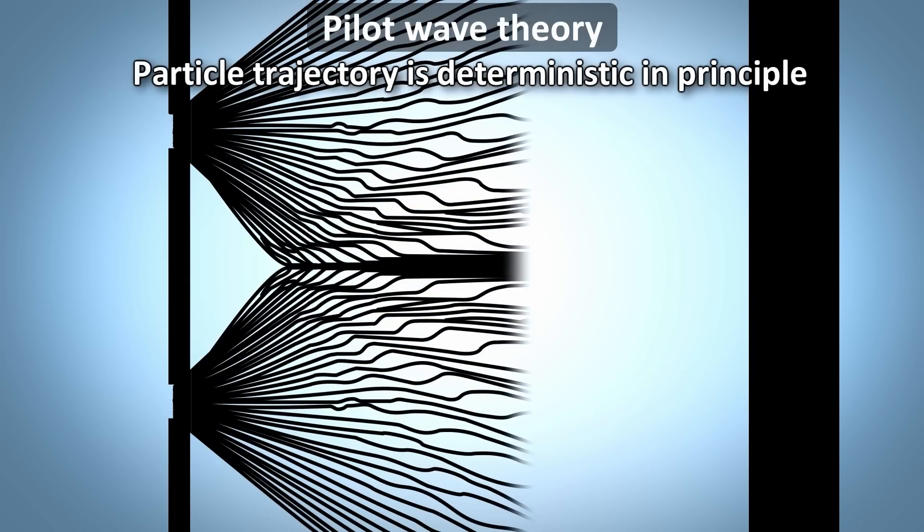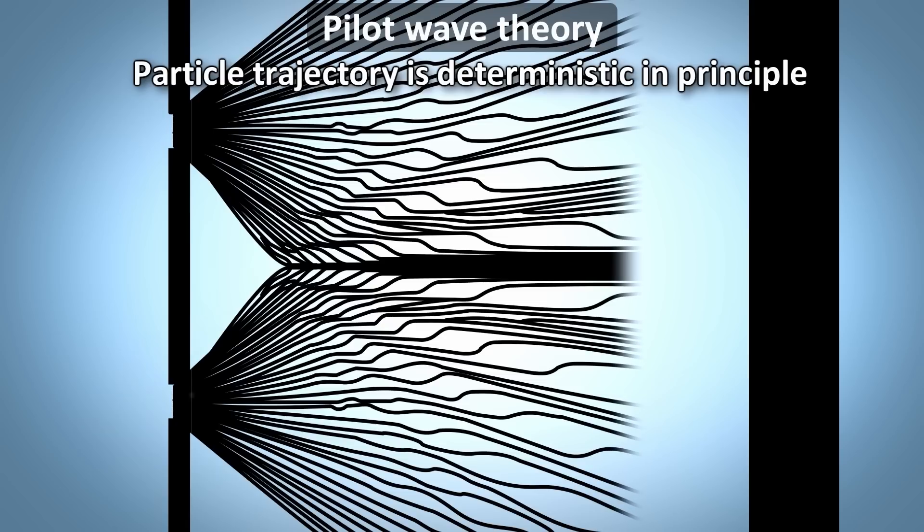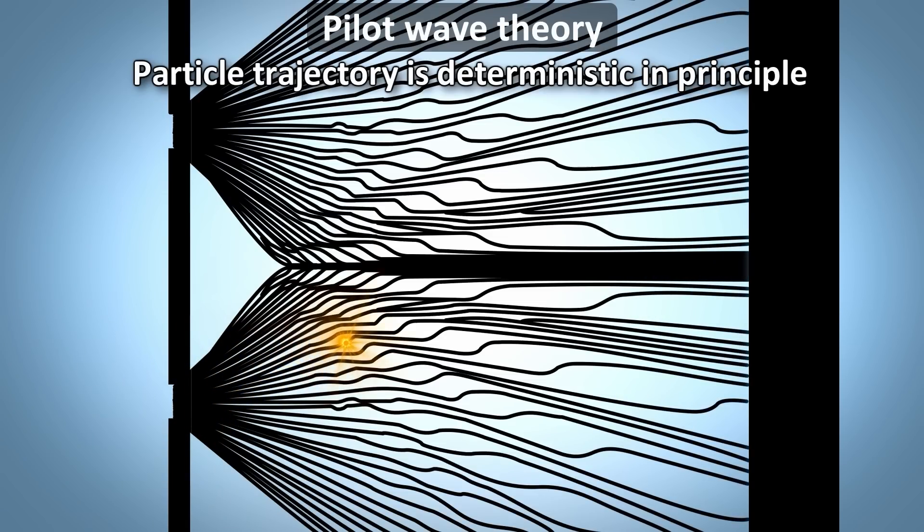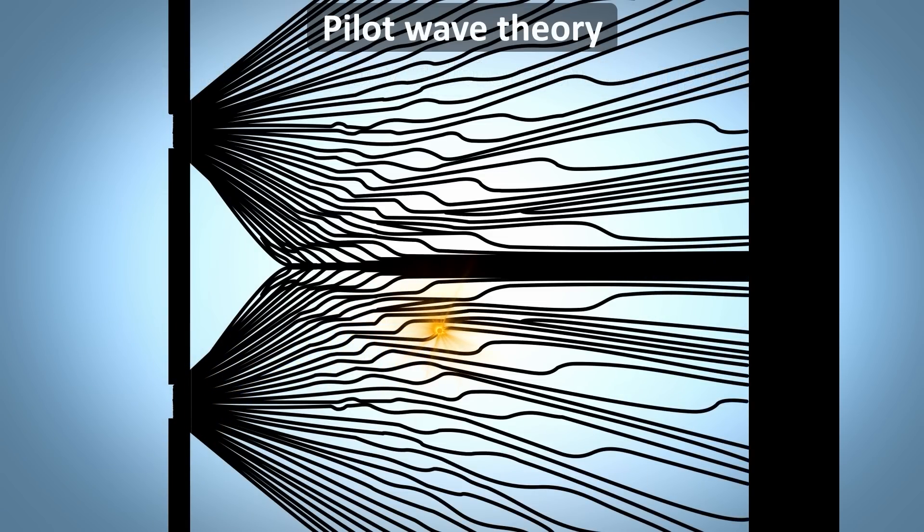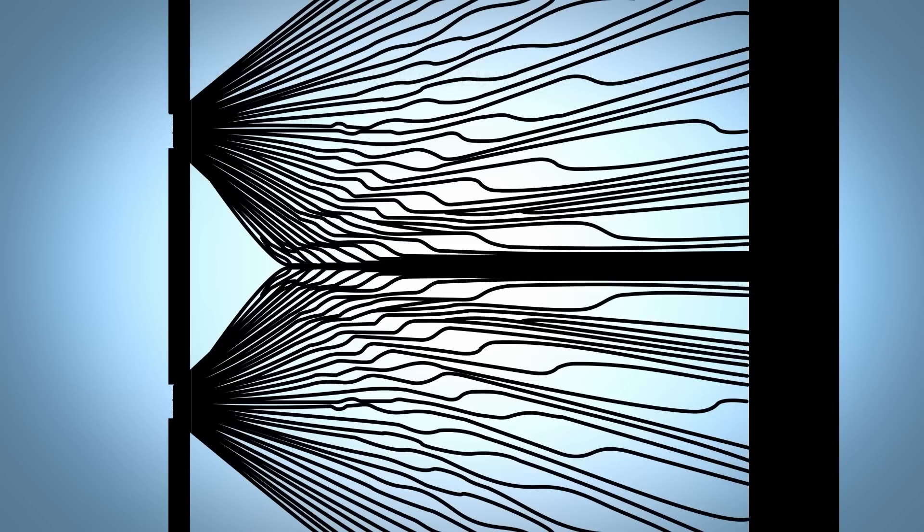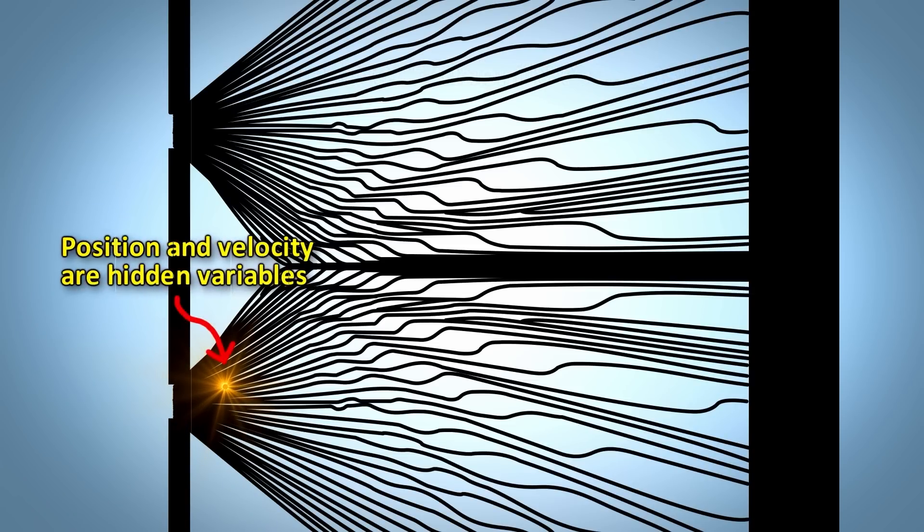The wave provides a set of potential trajectories, but the particle takes only one trajectory. In this scenario, the trajectory of a particle only appears random, because we don't know its initial starting point. But if we did, we could hypothetically predict where the particle would be at all times, and where it will end up. So the uncertainty in this scenario is due to our inability to measure the particle's initial state, which is hidden. But hypothetically, the particle's position is predictable in advance. This is what makes this a deterministic theory.